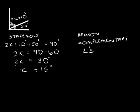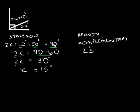In this next sum, we see that we've got 2x plus 10 plus 50 which is equal to 90 degrees. We write down our statement and our reason. So 2x plus 10 plus 50 equals 90. Now 10 degrees plus 50 degrees is equal to 60 degrees. We want our x's on the left-hand side and our constants on the right-hand side.